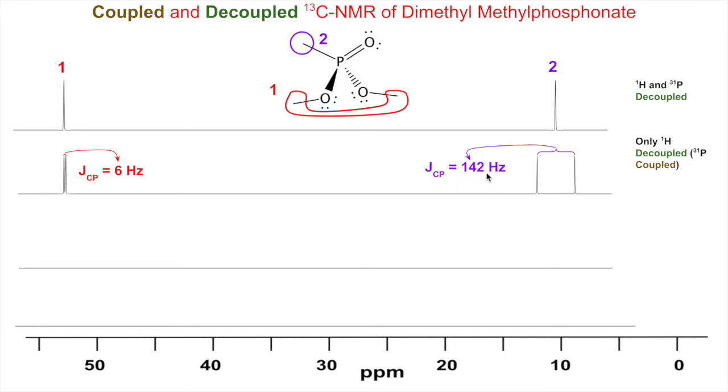Now let's look at only the phosphorus decoupled—the P-31. The hydrogen is still allowed to couple the carbons. Instead of both decoupled giving a singlet, or only hydrogen decoupled giving a doublet, if you just decouple the phosphorus you get a quartet.